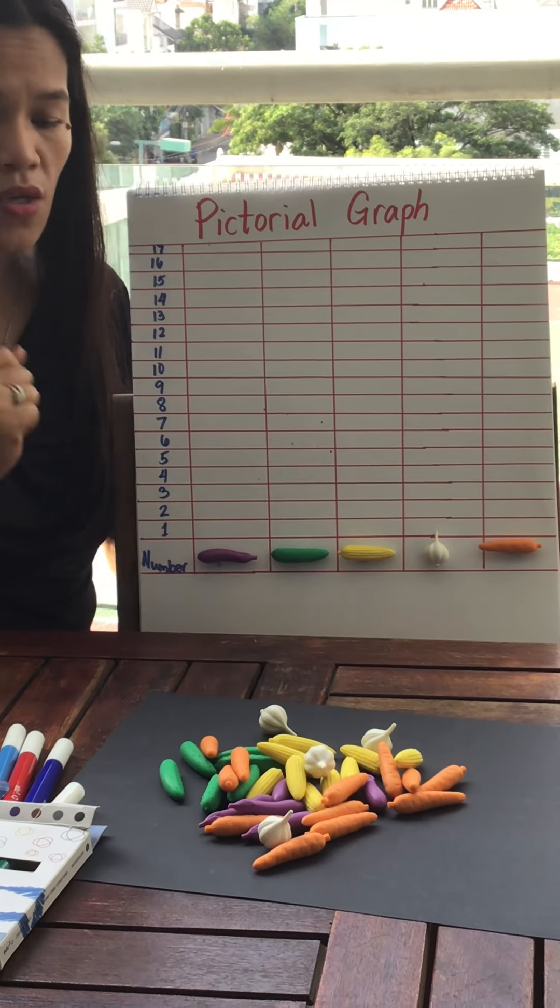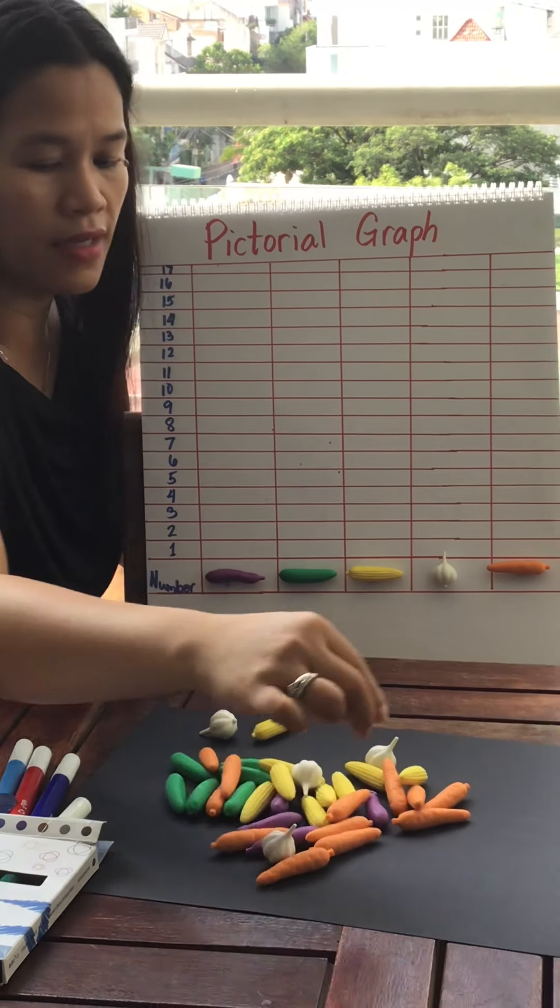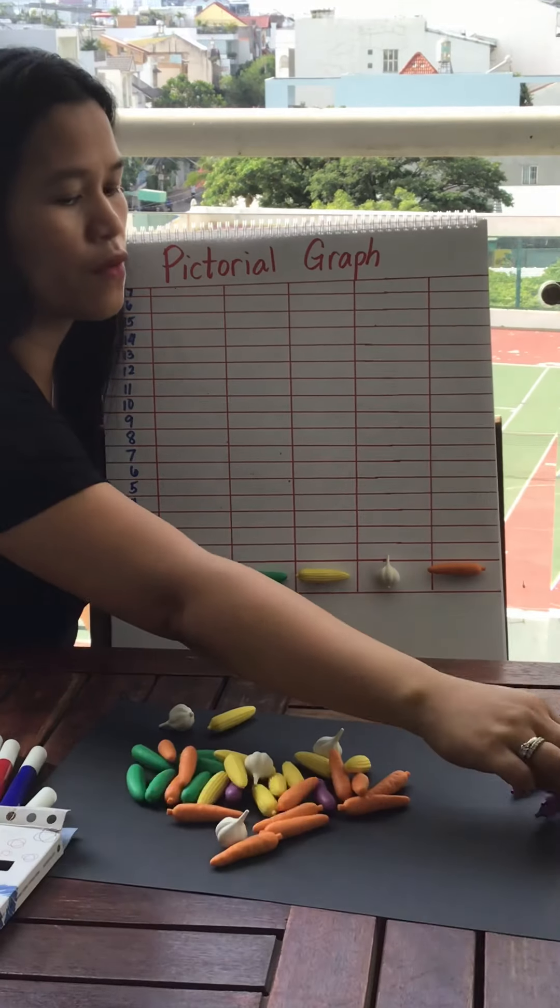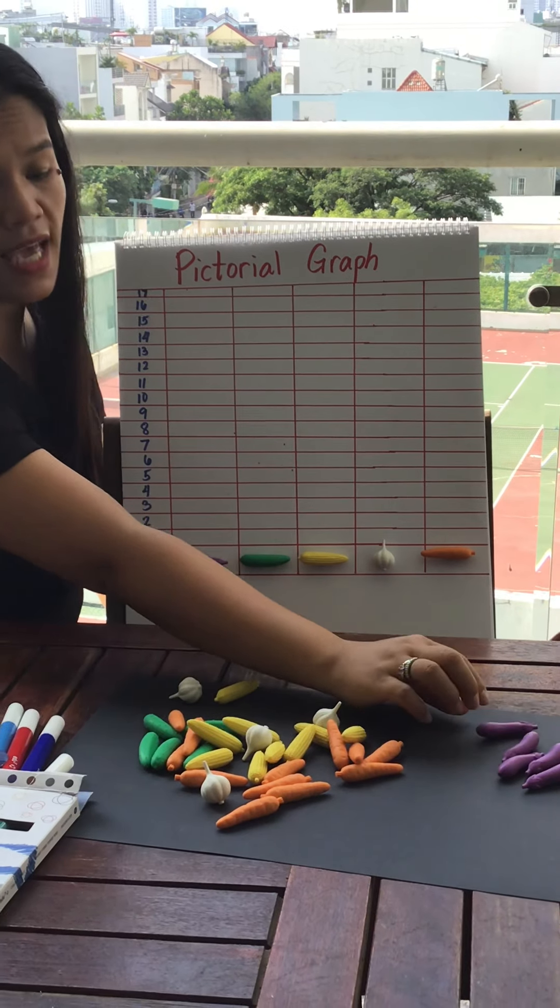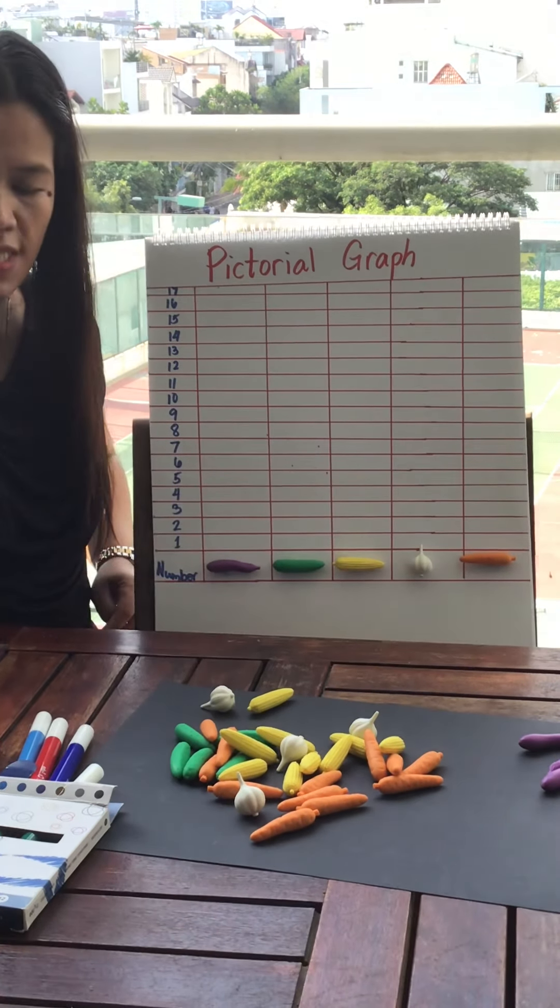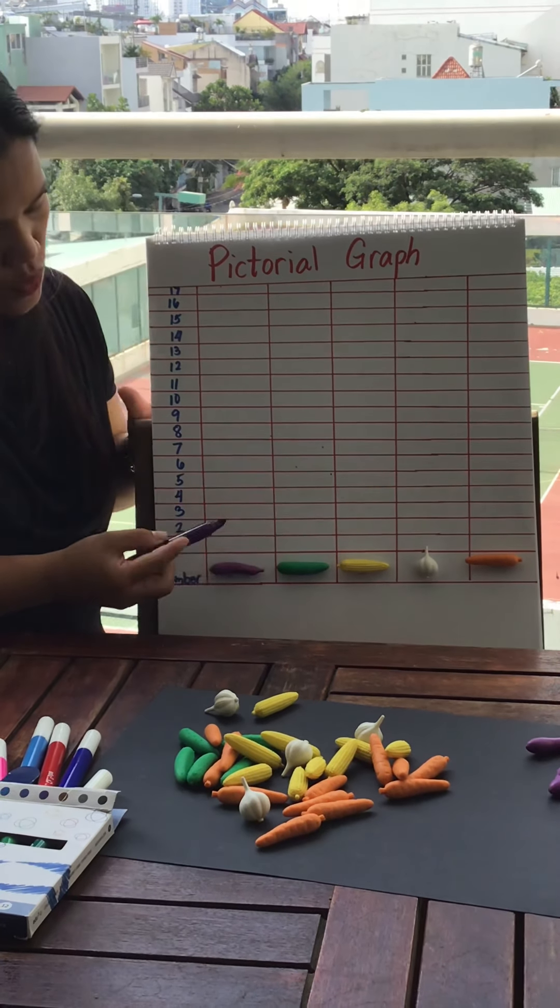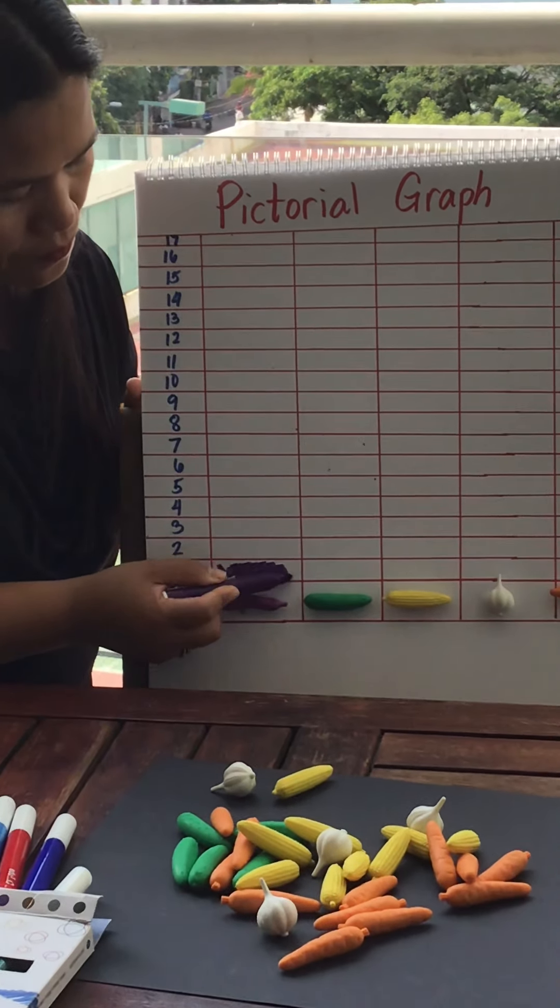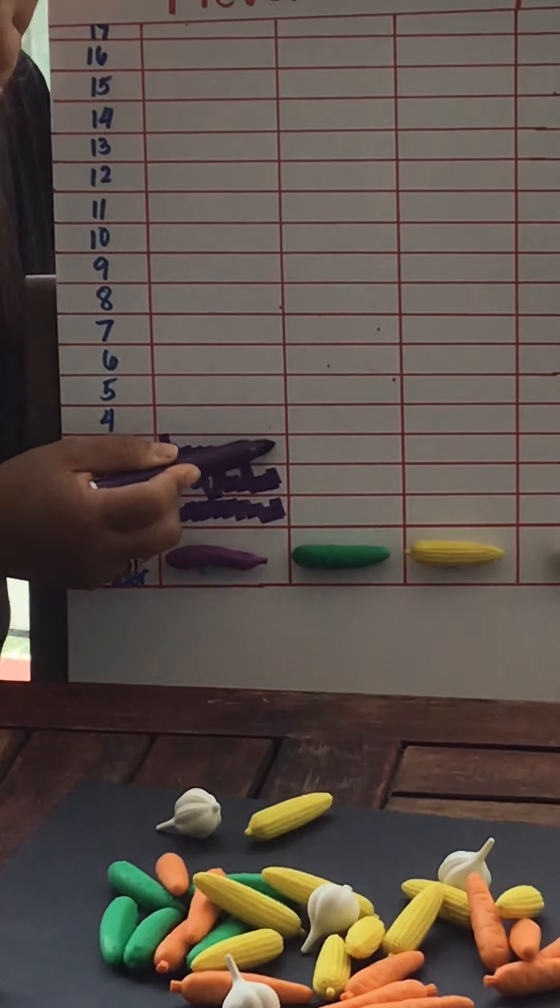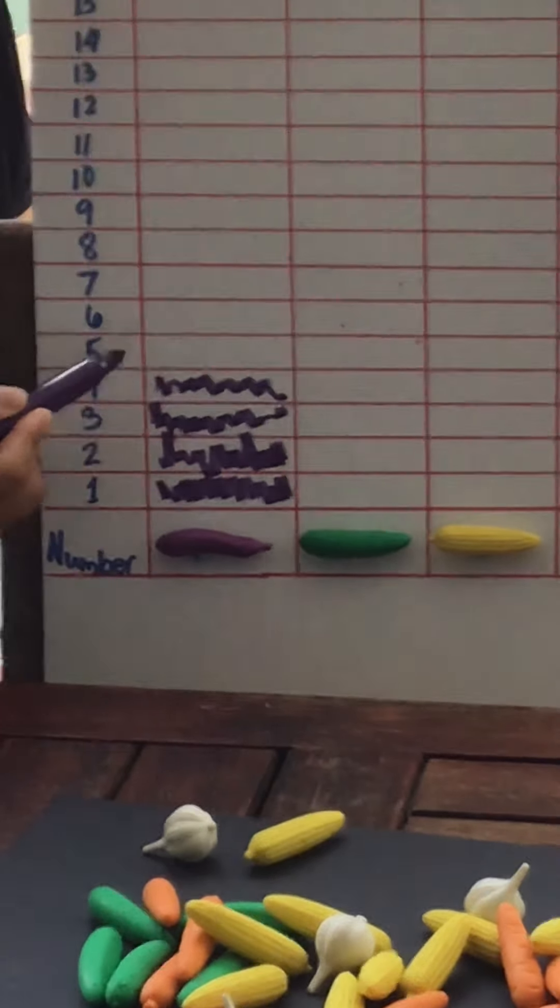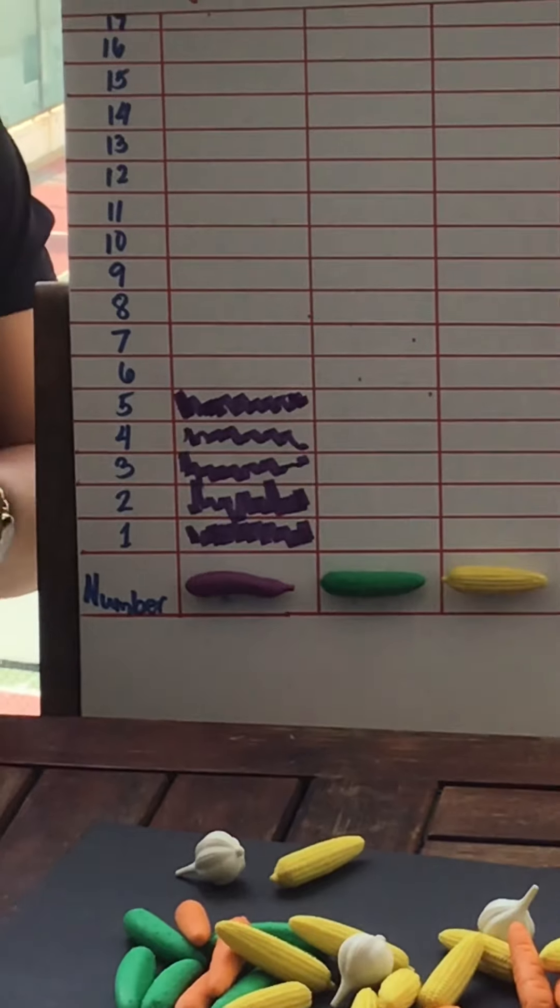For example, the eggplant. Let's count how many eggplants do I have. One, two, three, four, five eggplants. So I have five eggplants. I am going to use five. You can color it, one, two, because there is the number, three, four, and five. So I have five eggplants.